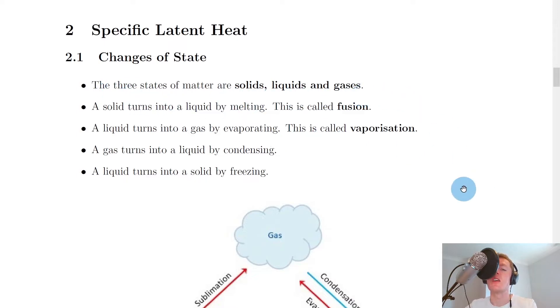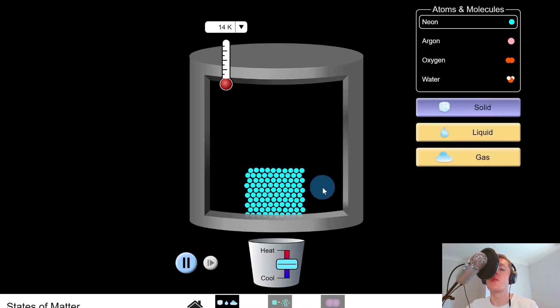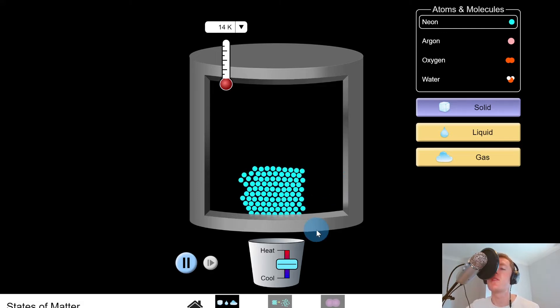I'm just going to show you a quick simulation to demonstrate the particle movement in these three states of matter. If you look here we've got a solid, so remember the particles in a solid, they're all tightly packed and close together and they form a regular shape or regular pattern as shown by this sort of square shape here. You'll notice that all of the particles are vibrating.